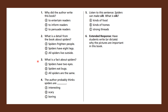Number three: what is a fact about spiders? Remember, a fact is something that is true — we can prove it. 'Spiders have two eyes' — is that true? How many eyes did we count? We counted six, so we know that can't be true. 'Spiders eat bugs' — did we see a spider eat a bug? 'All spiders are the same' — no, we saw spiders of different shapes and colors. We did see that spiders eat bugs, so the answer must be B.